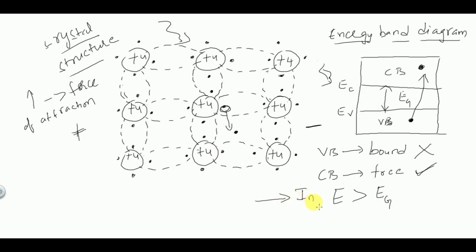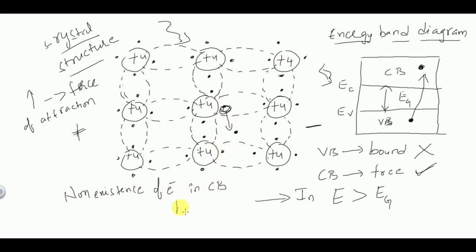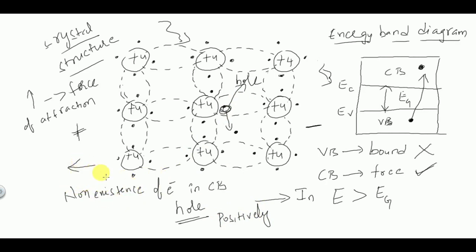The non-existence of an electron in a covalent bond is called a hole. Holes are positively charged particles. The motion of holes is in the opposite direction of electrons.